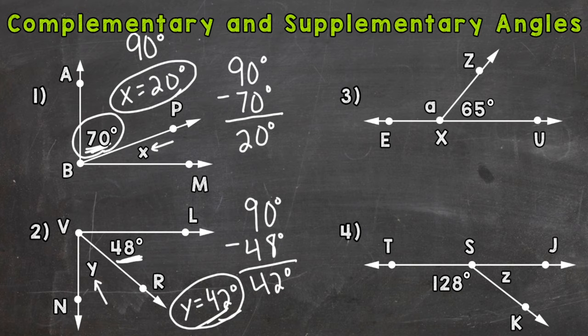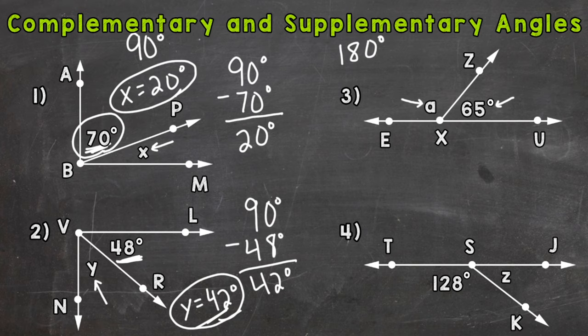42 plus 48 equals 90 degrees, so a 48 degree angle and a 42 degree angle are complementary. For number three and number four we're going to move to supplementary angles. Supplementary angles have to equal 180 degrees. For number three we have a 65 degree angle and we need to find what angle A equals in order to get to 180 degrees. We use the same strategy: 180 minus our given of 65 degrees.